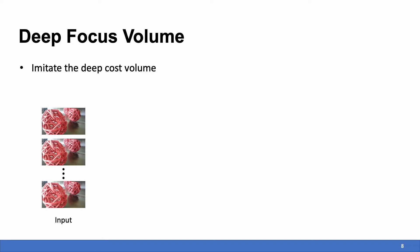Given a focus stack, we can first extract the deep features using a shared 2D CNN, and then stack the image features in a new frame dimension to obtain the deep focus volume, just as what the popular stereo matching networks do.